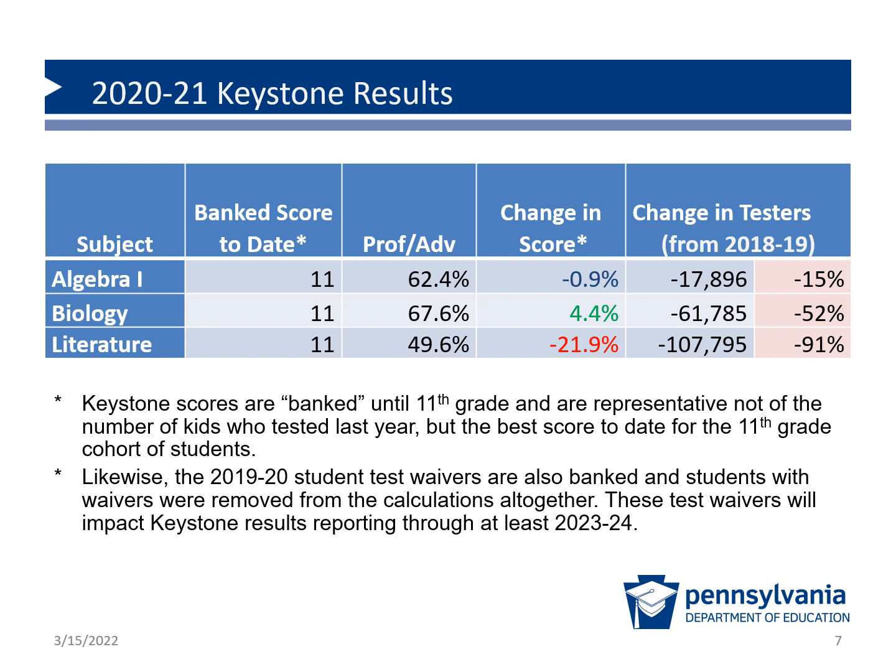The Algebra 1 scores remained essentially flat. You'll also notice Algebra 1 reflects the smallest decrease in participation with about 85% of the eligible testers reported. While that didn't significantly affect this year's results, those students who took the course in grades 7 through 9 will be omitted from the results in future years. Biology scores increased by 4.5%. However, only about half of the eligible testers are reflected in the count. How the waivers affected the relative sampling won't be fully evident until the remaining cohort are excluded next year.